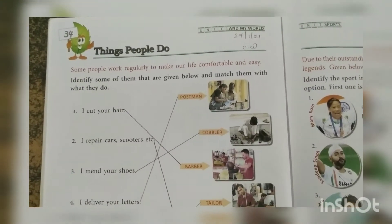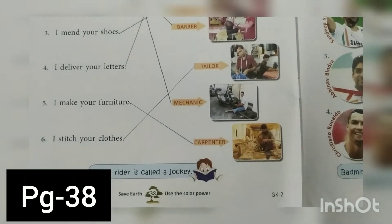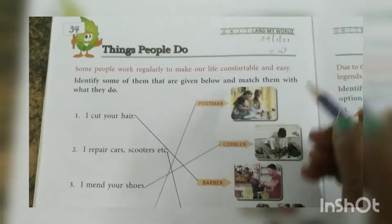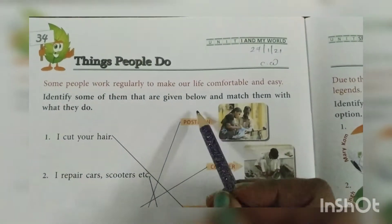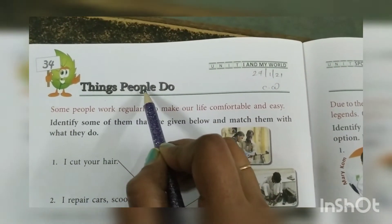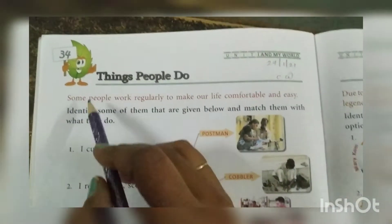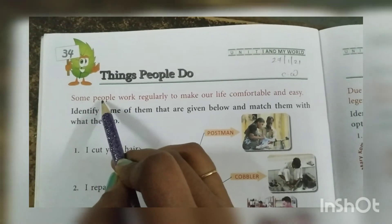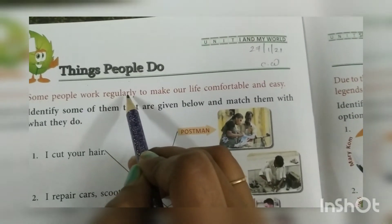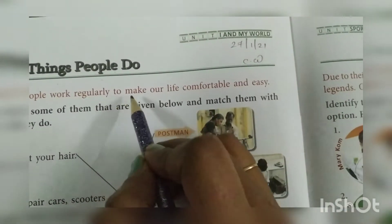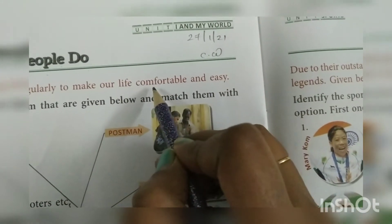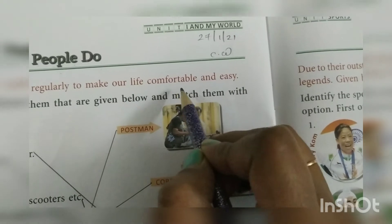Now move forward to page number 38. Here also write today's date: 27 oblique 1 oblique 21, CW. Chapter number 34: Things People Do. T-H-I-N-G-S Things, P-E-O-P-L-E People, D-O Do. Some people work regularly to make our life comfortable and easy.